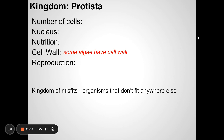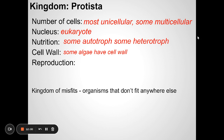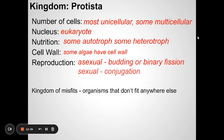Protista is a kingdom you may not know well — did you ever look at a paramecium or amoeba under a microscope? Euglena? Those are all protists. They're single-celled, but more complex — they do have a nucleus and other organelles, making them eukaryotes. Some can be autotrophs, some heterotrophs, and some can be both. They can reproduce sexually or asexually.